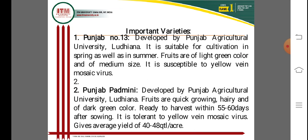Different varieties of okra are available. Punjab Number 13 was developed by Punjab Agricultural University, Ludhiana. It is suitable for cultivation in both spring and summer seasons, and is grown across all states in India. Fruits are bright green color and medium size. However, it is susceptible to Yellow Vein Mosaic Virus (YVMV), which is a very dangerous disease.